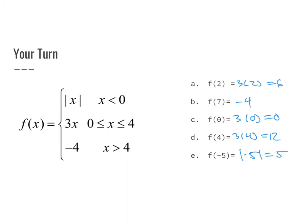Let's see how you did. For f(2): 2 is between 0 and 4, so I use 3x, giving 6. For f(7): 7 is greater than 4, so the function is just negative 4. For f(0): 0 is between 0 and 4, so 3 times 0 equals 0. For f(4): 4 is less than or equal to itself but not greater than itself, so I use the second piece: 3 times 4 equals 12. For f(negative 5): negative 5 is less than 0, so plugging into the absolute value function gives positive 5.